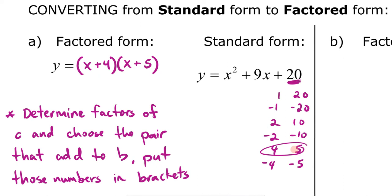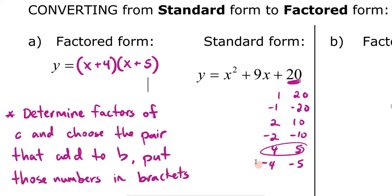So what we did was take the C value, determine all its factors, choose the pair that adds to B, and put those numbers in brackets.